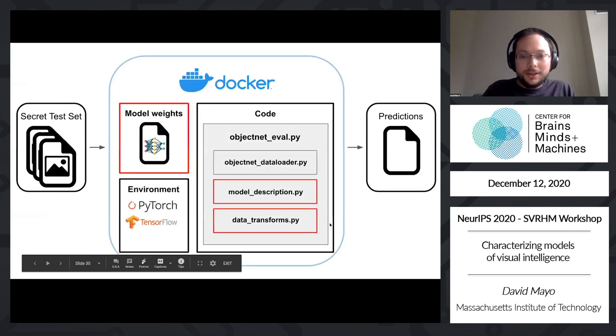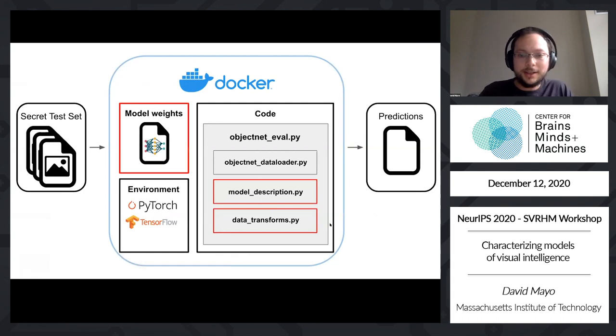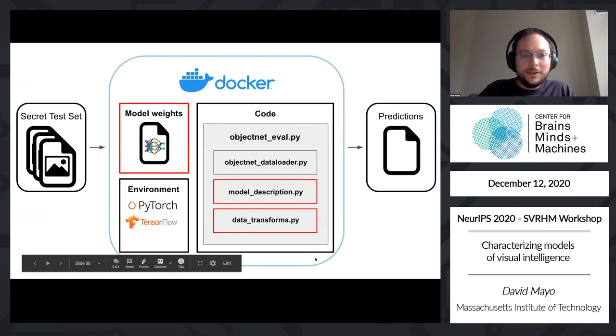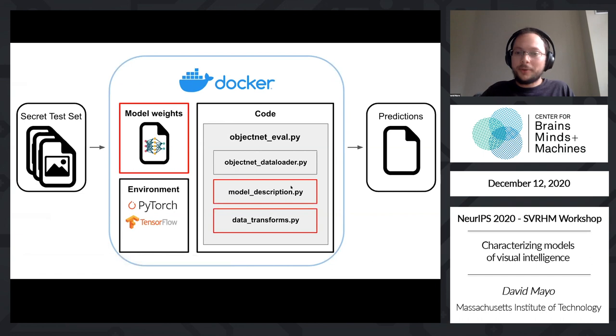And with this, we're releasing some starter code in both PyTorch and in TensorFlow, where it's very easy, once you've trained the model, to stick in your model weights to update the model description files and the data set transforms for however your model was trained, and then upload this to us, and we'll evaluate and let you know how well your models are doing on real-world data sets.